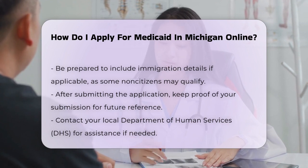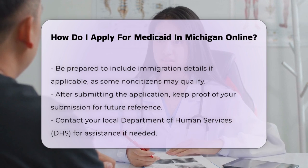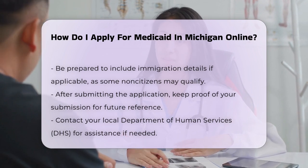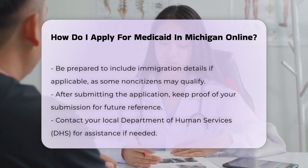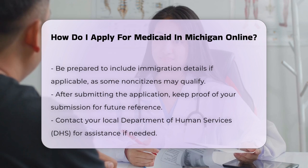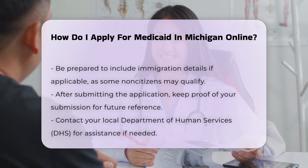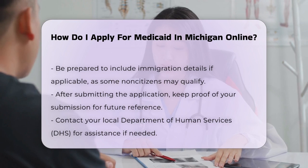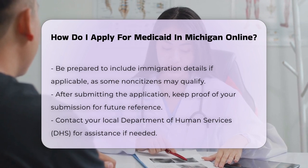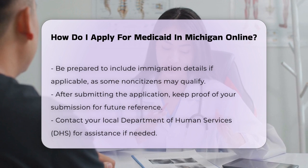After filling out the application, you'll need to submit it. Once submitted, you'll have proof of your application, which is handy in case you need to refer back to it. If you need help during the application process, you can contact your local Department of Human Services, DHS, office. They can provide assistance and answer any questions you might have.